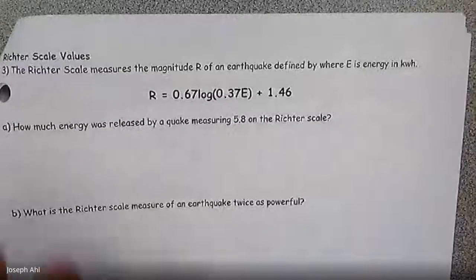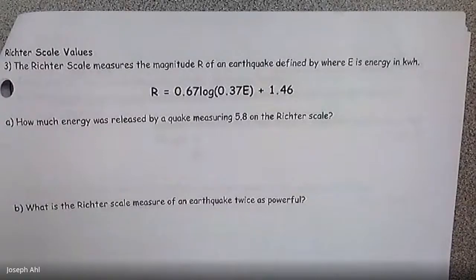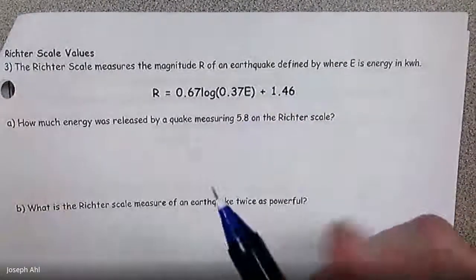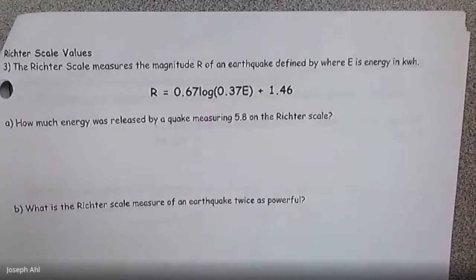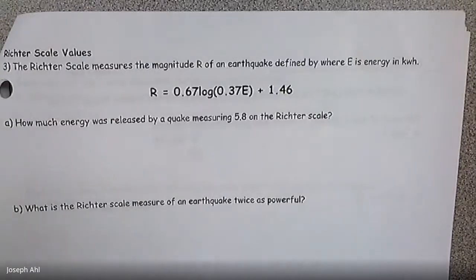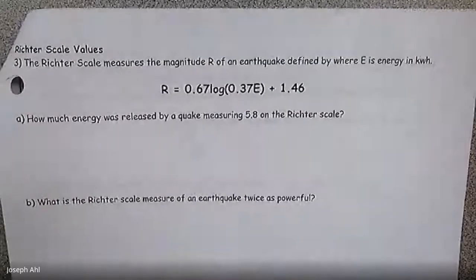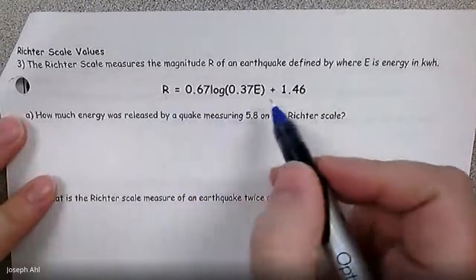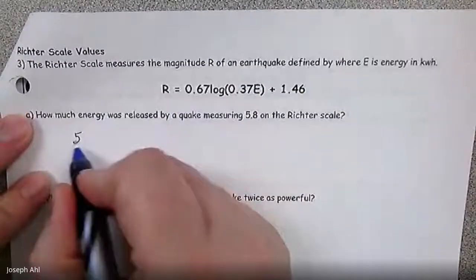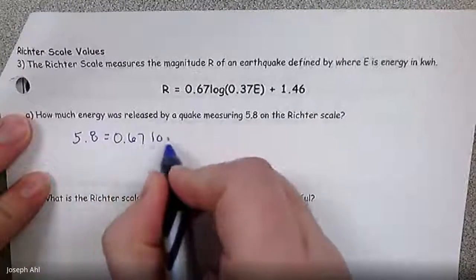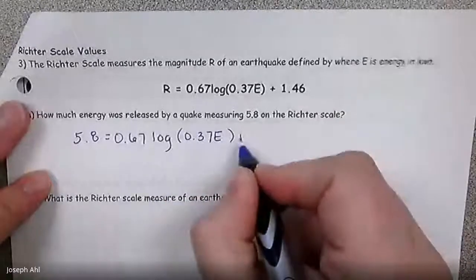So last example we're going to do together today is talking about Richter scale values. The Richter scale is what we use to measure the magnitude of an earthquake. So here's the formula that is used to calculate a Richter scale value that an earthquake gets. So R is the Richter scale. And then the value of capital E in this case is the energy that's emitted by the earthquake in kilowatt hours. How much energy was released by an earthquake measuring 5.8 on the Richter scale?